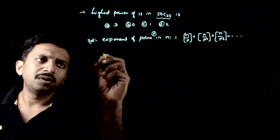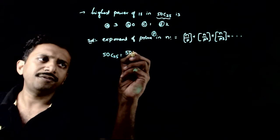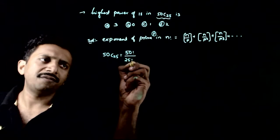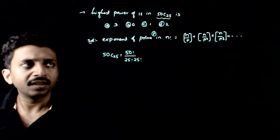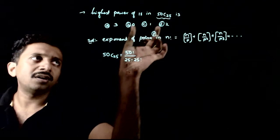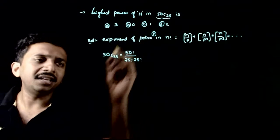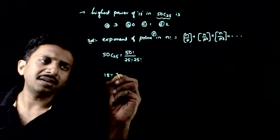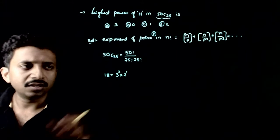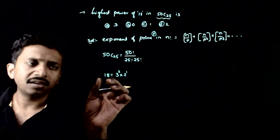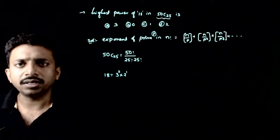50C25 is equal to 50! divided by (25! × 25!). Now, in this I want the exponent of 18. Since 18 must be a factor, you should have two 3s and one 2 — that is, 18 = 2¹ × 3².